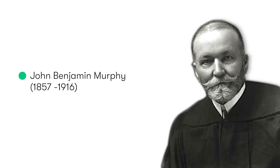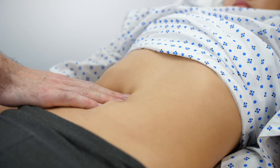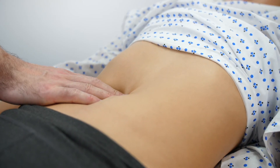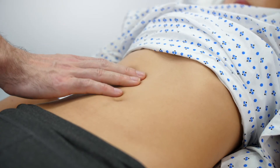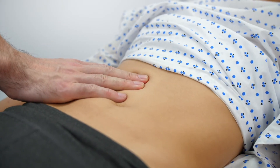Murphy's sign was named after the 19th century American surgeon John Benjamin Murphy. Murphy described how in patients with acute cholecystitis, if they were palpated at the point where the right costal margin and the lateral border of the rectus met, they experienced pain upon taking a deep breath in, which would result in the patient stopping their inspiration.